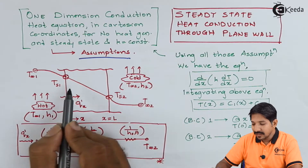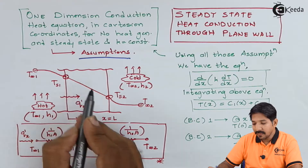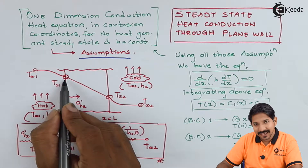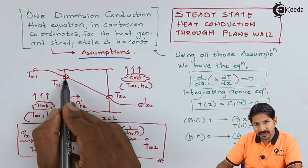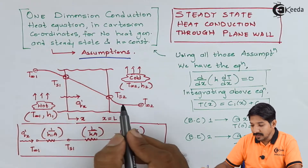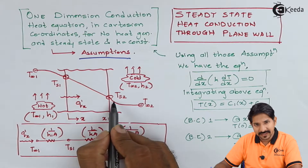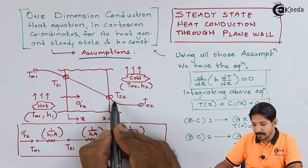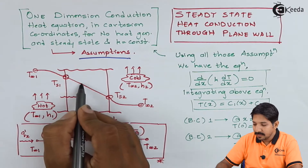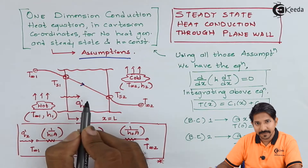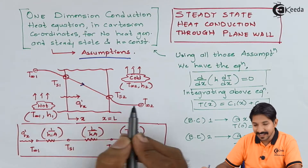So obviously, there is a temperature drop from Ts1, that is the surface temperature on the left hand side of the wall, to Ts2, which is the surface temperature of the right hand side of the wall. Now this drop will be linear — why, we will see later.